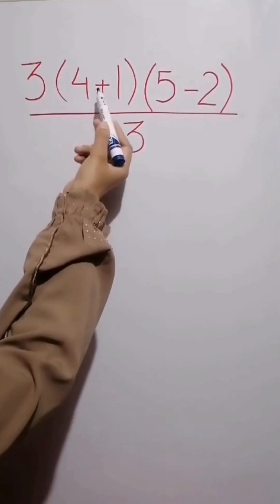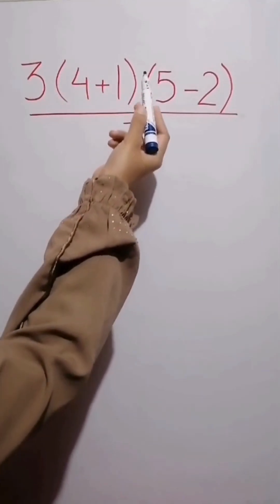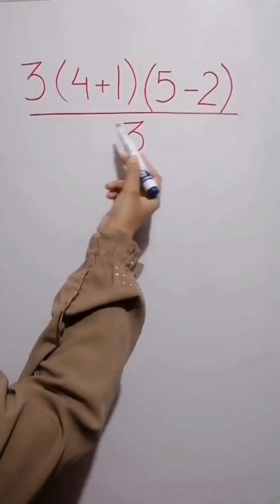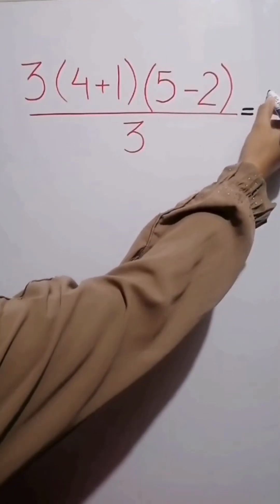3 open parentheses, 4 plus 1 close parentheses, then times 5 minus 2, then over 3. What is the answer of this question?